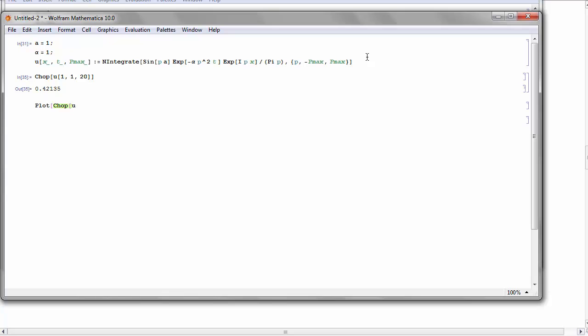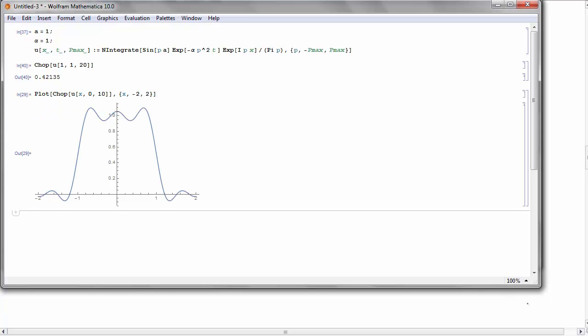So let's plot our function u of x comma t equal to 0. And then I'm setting the bounds, instead of negative infinity to infinity, negative 10 to 10 to make my life easier. And I plot that, and it roughly looks like my initial condition. I could do better if I increased my limits on my integral.